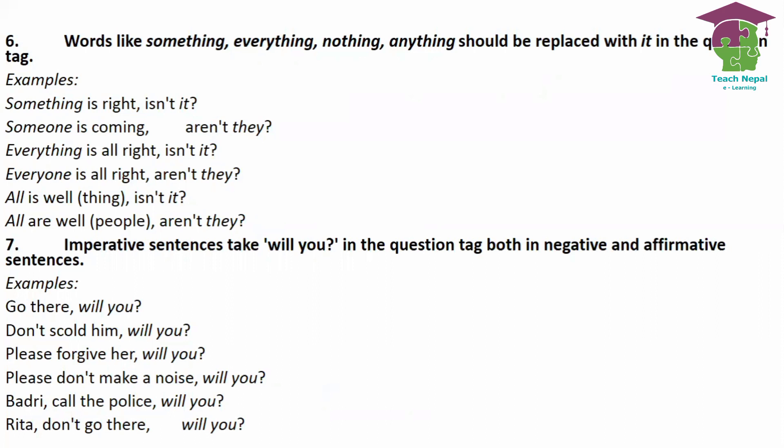Rule number seven: imperative sentences. Imperative sentences start with the base verb form. Whether they are negative or positive, we use the same tag question: 'will you'. For example: 'Go there, will you?', 'Don't scold him, will you?', 'Please forgive her, will you?', 'Please don't make a noise, will you?' So whether positive or negative, the tag for imperatives is always 'will you'.